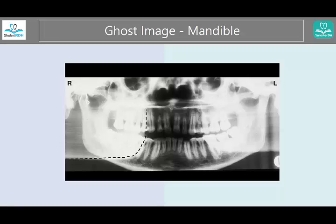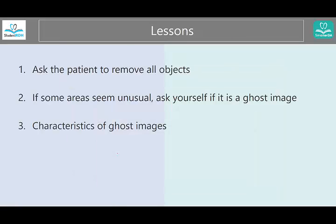Ghost images are not just about earrings — they're also about oral structures. Can you see this? This is the mandible, the angle of the mandible, and this is the ghost image of the same structure: higher up, blurry, and on the opposite side.